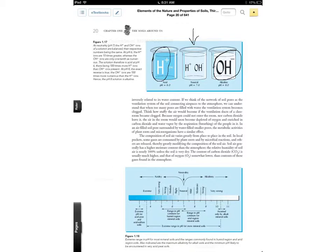In figure 1.18, you have a scale of acidity or alkalinity. When we're on the left side of that scale, if we have a pH of 4 in our soil, that's very acidic.